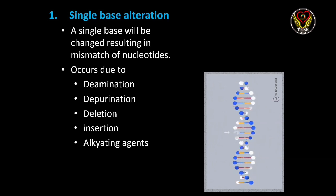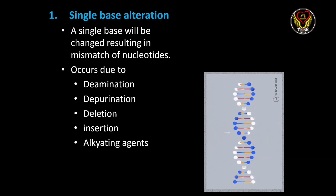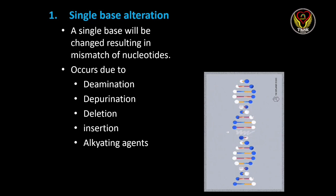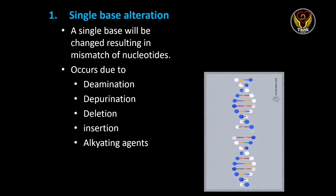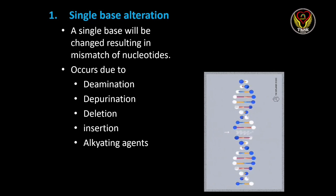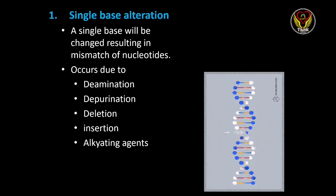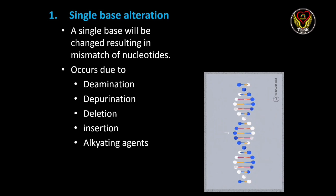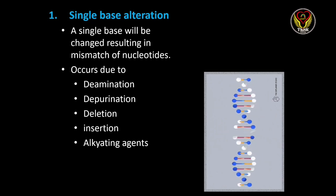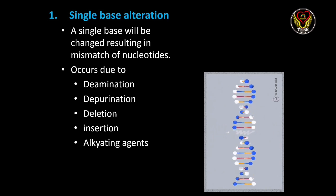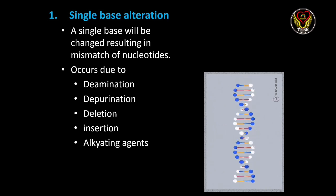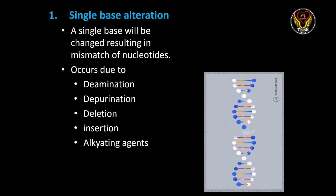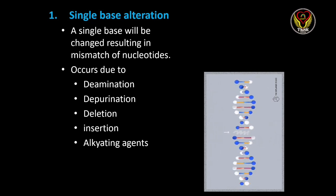In deamination, the amine group from the nitrogenous base gets removed, which causes the base to transform into another base, causing base alteration. In depurination, adenine and guanine are the two purines involved — the bond between the A or G base and the sugar backbone gets disturbed, causing the purine to be removed from its site, resulting in an apurinic site. Other causes include deletion, in which any one base gets deleted, and insertion, where a base pair gets inserted at the wrong site. Alkylating agents can also cause abnormal base pairing, leading to DNA damage.